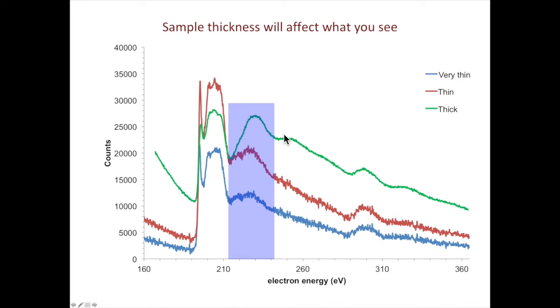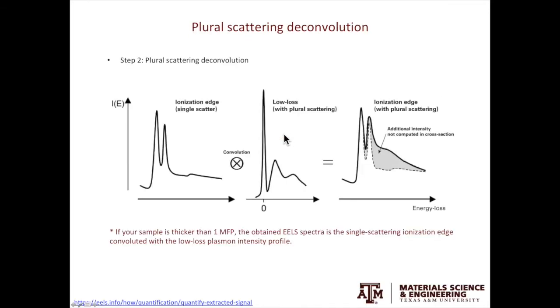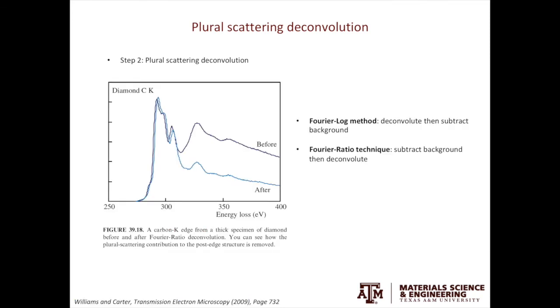What you are looking at here is from the plural scattering. In EELS, the edges we observe ideally are ionization edges from single scattering events. However, most of the TEM foils we have are thicker than one mean-free path. The ionization edge caused by the single scattering is convoluted by the low-loss scattering events, which gives you additional intensity in your EELS spectra. There are a number of algorithms to perform deconvolution. I will not go through the detailed math here.